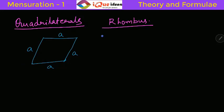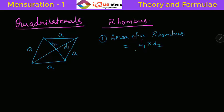The important properties related to Rhombus: First is the area. If you know the diagonal lengths D1 and D2, the area of a Rhombus is D1 × D2 divided by 2. This is a very important formula—half the product of diagonals. You have to memorize it directly.